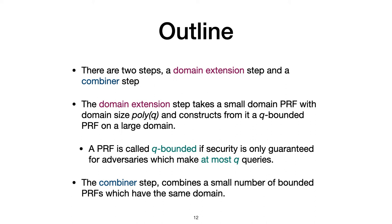Here's an outline of our construction. There are two steps. The first step is domain extension step. In this part, we take a small domain post-quantum PRF to build a Q-bounded quantum PRF on the large domain. Here, Q-bounded means if a PRF is Q-bounded, its security is only guaranteed for adversaries which can make Q queries at most. The second step is called combiner step, which combines a small number of bounded quantum PRFs which have the same domain.